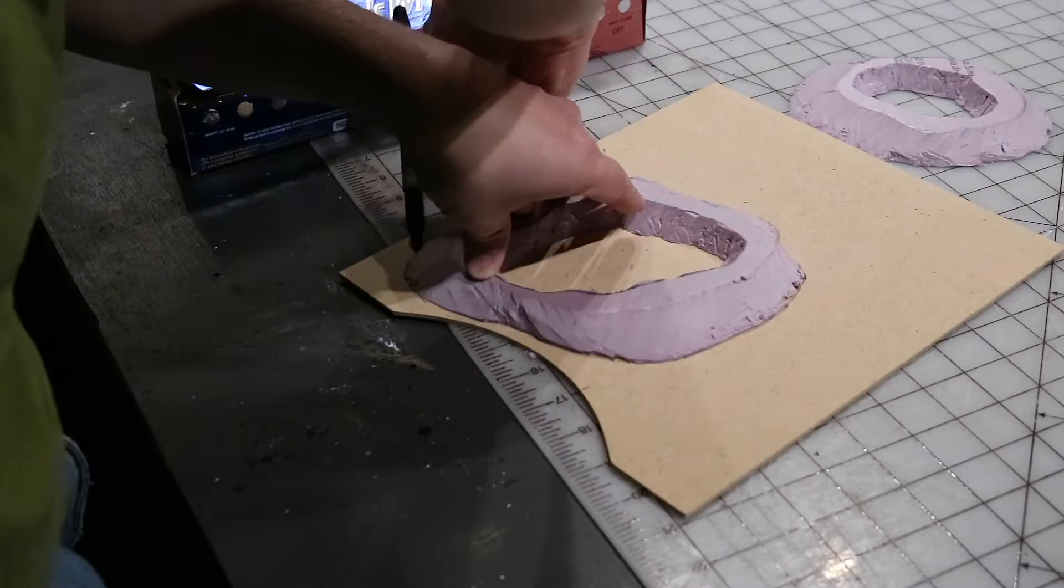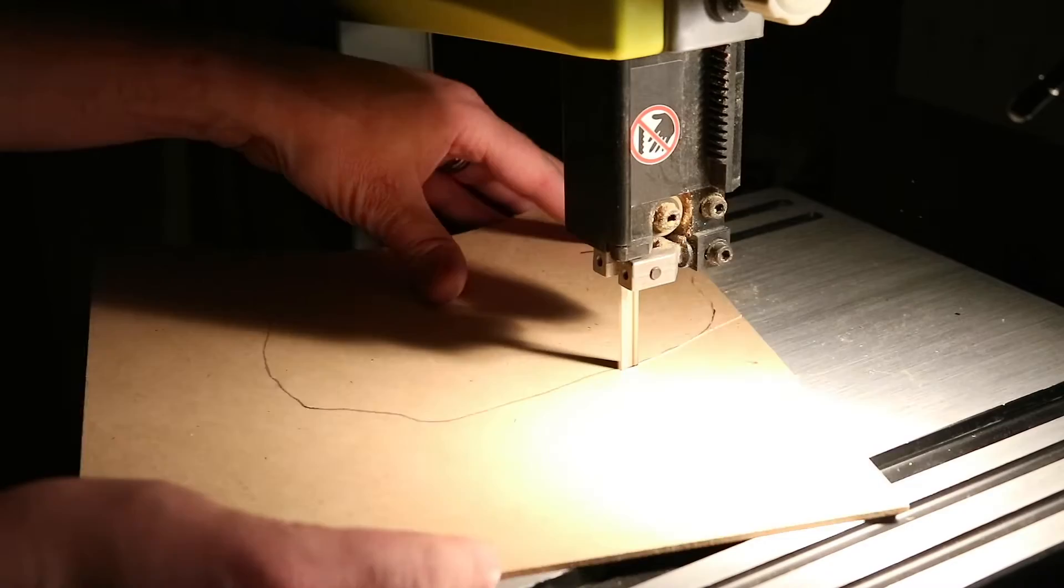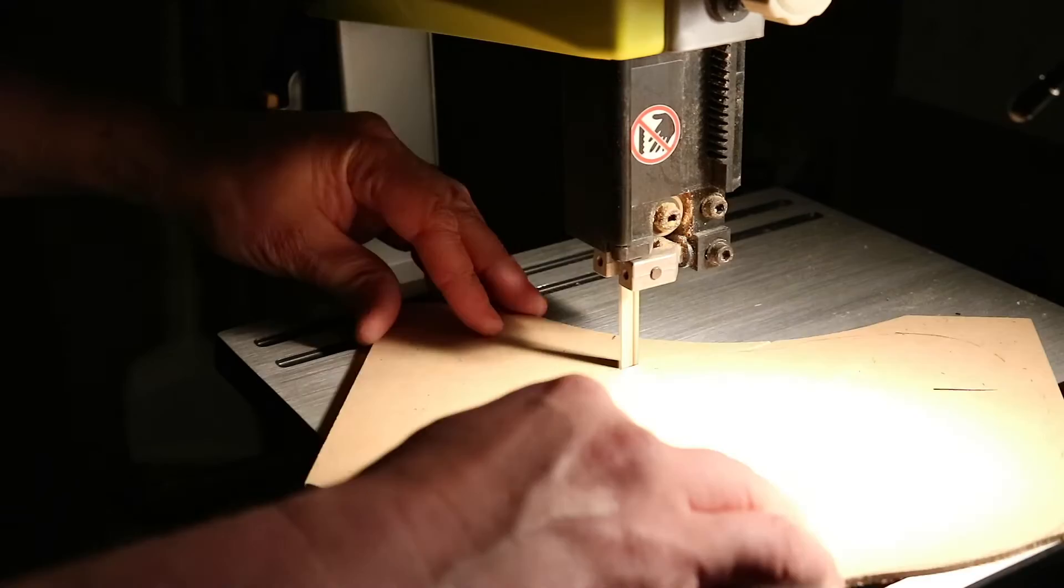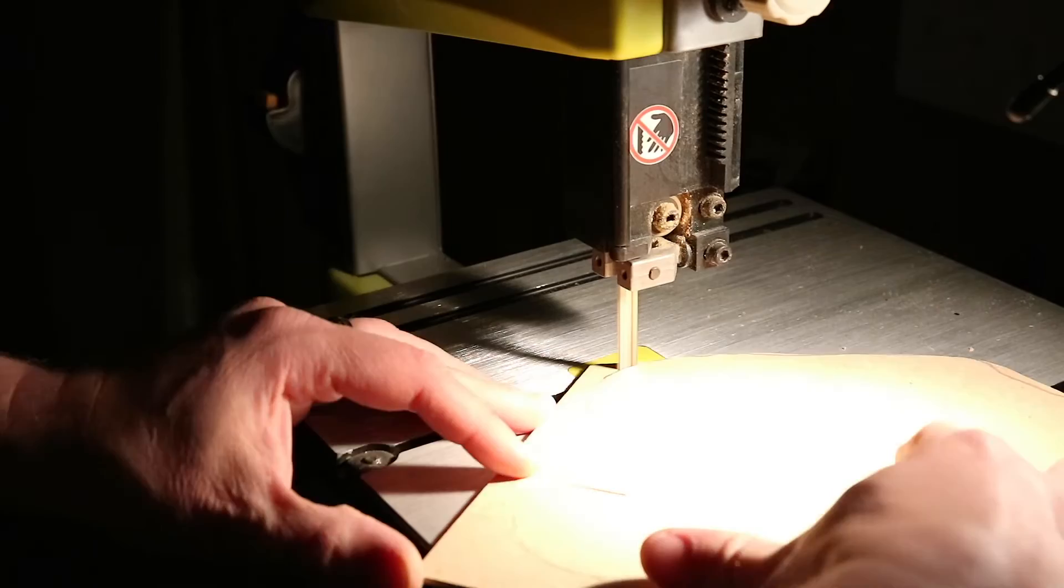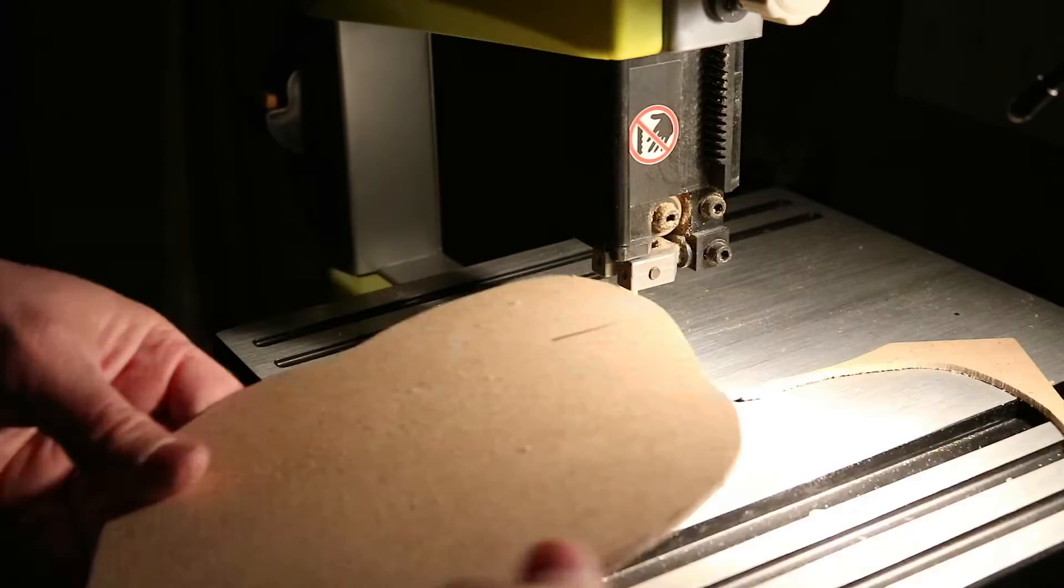Now we're going to trace the outside of this onto some eighth inch MDF board. We're going to go to the bandsaw and cut out the pattern of that outer pit. We're going to cut pretty tight to that traced line as we don't want any of this MDF really sticking out past the bottom of the pit when we're done with it.